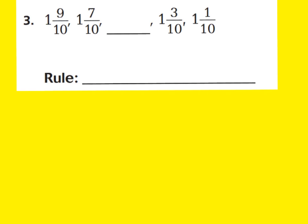Let's go ahead and take a look at question number 3. For question number 3, we need to look and see what exactly is happening. I can see that my number looks like it's decreasing because it's starting out as 1 and 9 tenths, but then it goes to 1 and 7 tenths. So right away I know my rule is going to be a subtraction rule, but we have to determine how much it is decreasing.